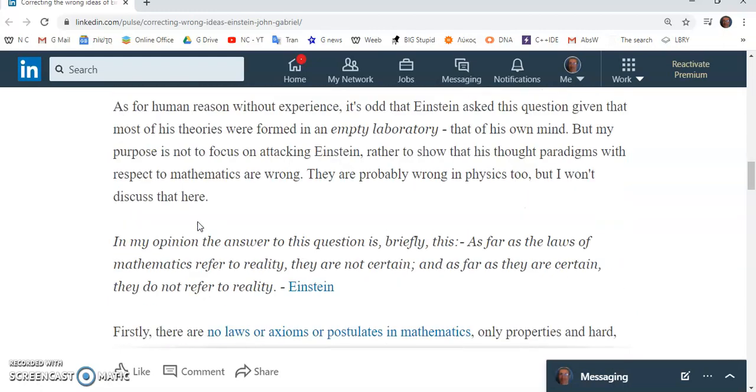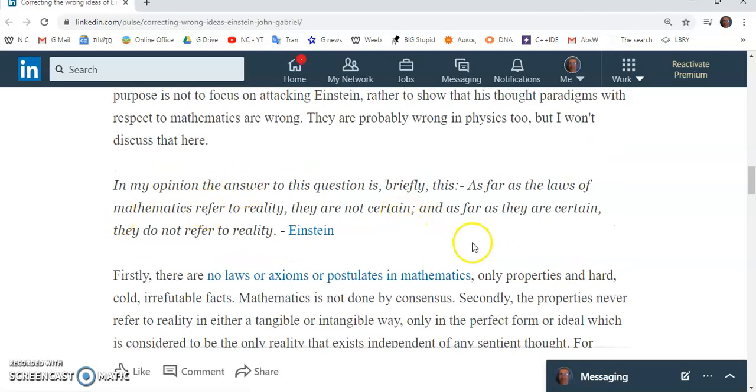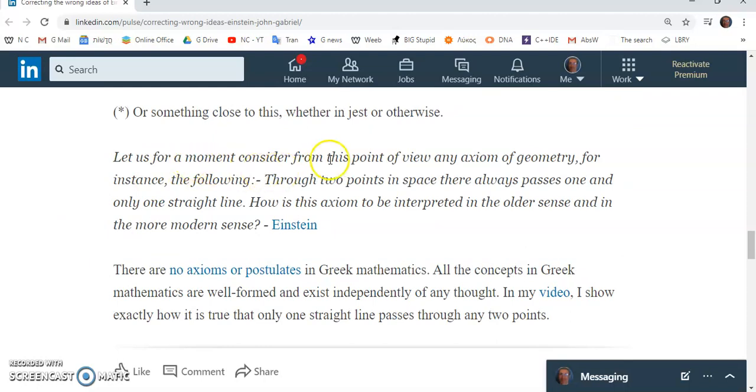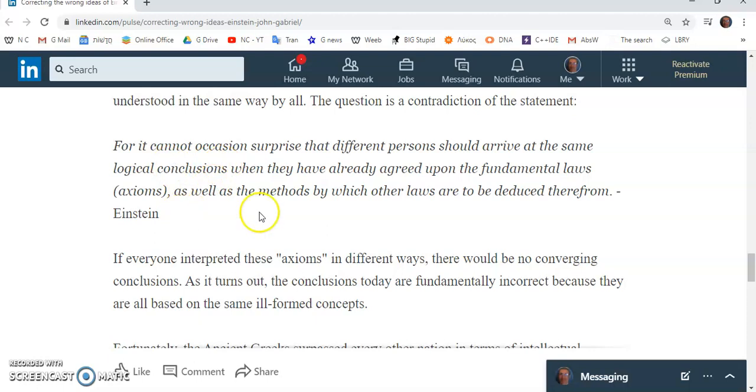Einstein made many quotes, and a lot of them, I think, were really more theatrical than anything else. He had an army of pithy quotes, if you want to call them that. And one of them is this. He says, as far as the laws of mathematics refer to reality, they are not certain. And as far as they are certain, they do not refer to reality. Then he makes another statement, which is just complete garbage. He says, let us for a moment consider from this point of view any axiom of geometry. First of all, there are no axioms in geometry or in sound mathematics. For instance, the following, through two points in space, there always passes one and only one straight line. How is this axiom to be interpreted in the older sense and in the more modern sense? You'll see later on that he actually contradicts himself.